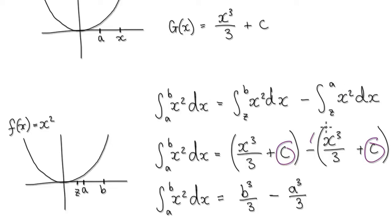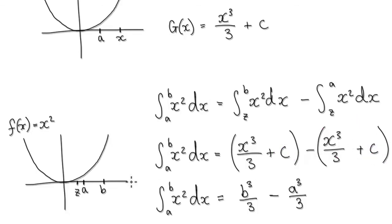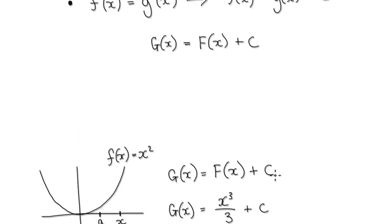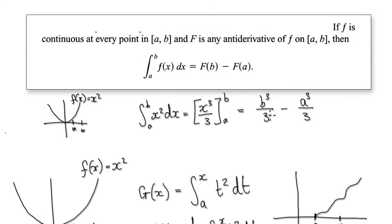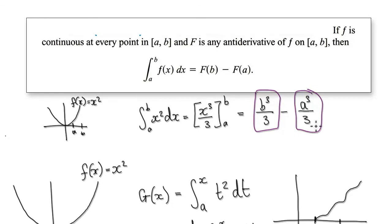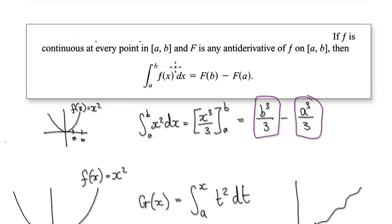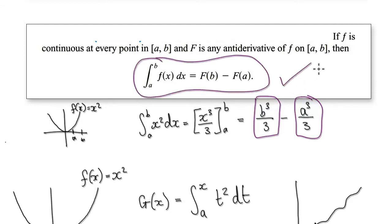No matter what the mystery number is, you know it's going to disappear because of the minus C. So the area from A to B is given by the antiderivative evaluated at B minus the antiderivative at A — which is exactly consistent with what we did at the start of the video: B to the power of 3 over 3, take away A to the power of 3 over 3. That's why the second fundamental theorem of calculus works, and hopefully you can follow that.